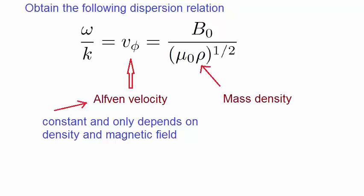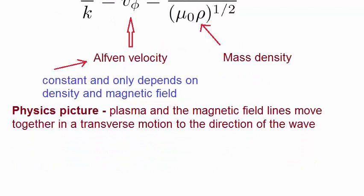Let's look at the physical picture of an Alfvén wave. We find that the plasma and the magnetic field lines move together in a transverse motion to the direction of the wave. In the previous cases, the magnetic field lines were unaffected by the plasma. But in this case, not only does the plasma move, but it moves in synchronization with the magnetic field lines at right angles to the direction of motion of the wave. It's almost like treating the magnetic field line like a plucked string.